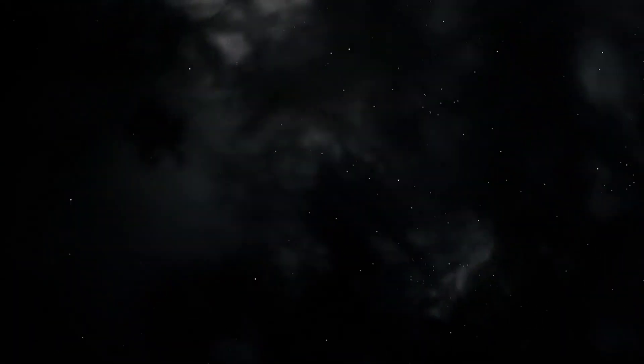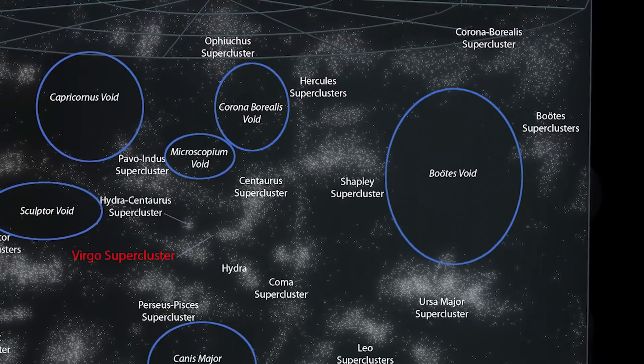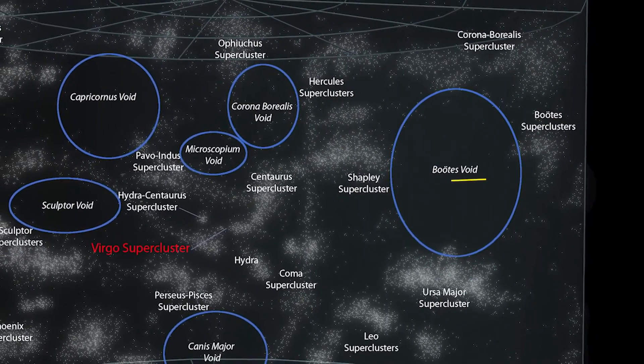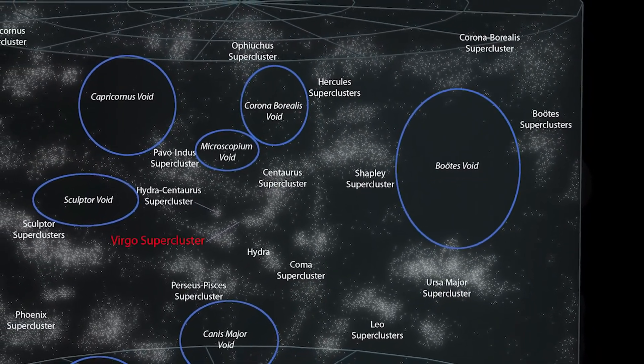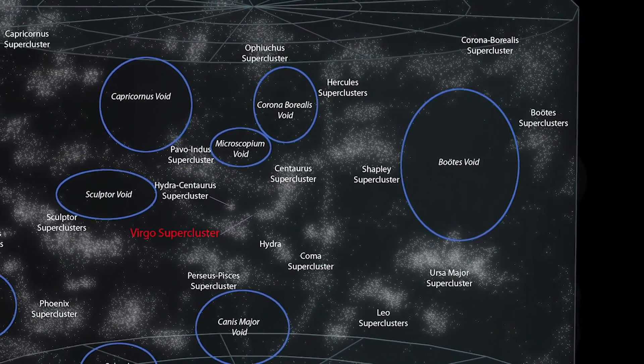Another idea is that it's due to the hierarchical nature of galaxy formation, where smaller structures merge to form larger ones, leaving behind voids. The few galaxies inside the Boötes Void are primarily located in a tube that runs through the void, suggesting they may be remnants of a cosmic filament, part of the intricate web that makes up the universe's structure.